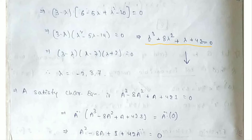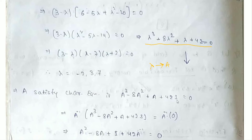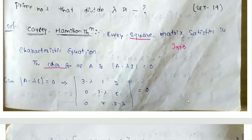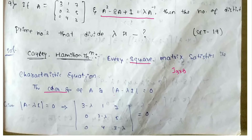So this is the characteristic equation. By Cayley-Hamilton theorem, A satisfies its own characteristic equation, giving us: A³ - 8A² + A + 42I = 0.